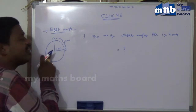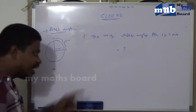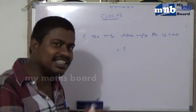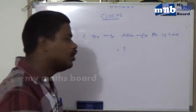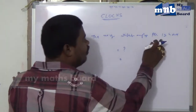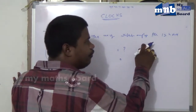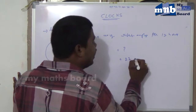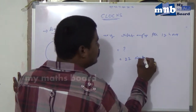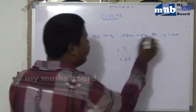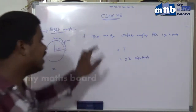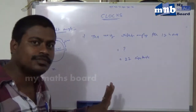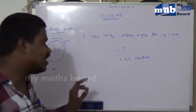The two common right angles are three o'clock and nine o'clock, which are not countable. So 12 into 2 is 24, minus 2 equals 22. There are 22 right angle positions in 12 hours.